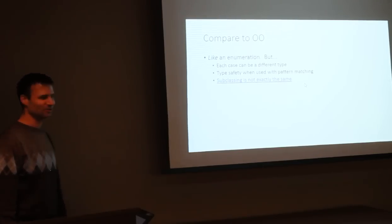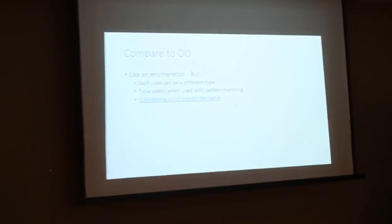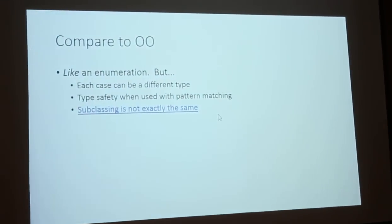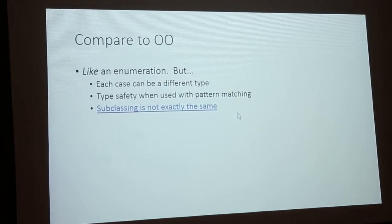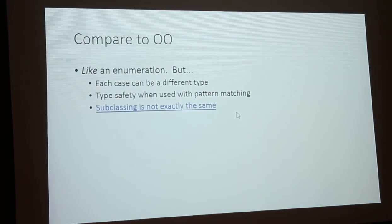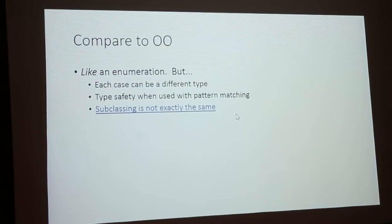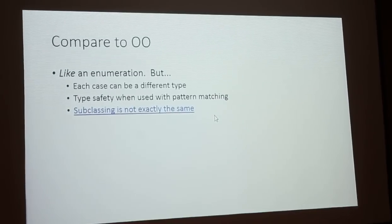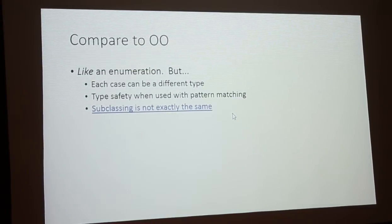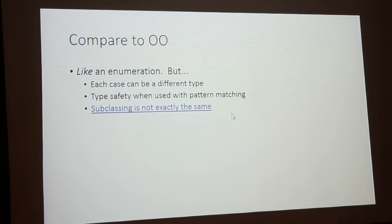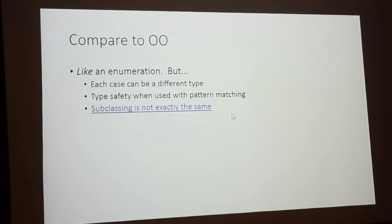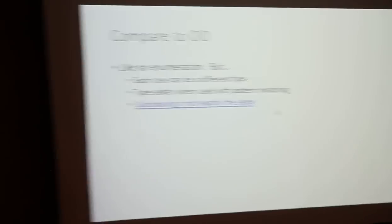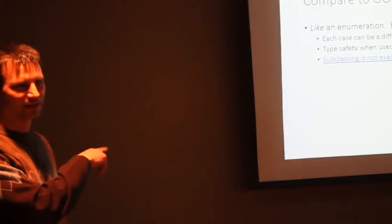All right so discriminated unions comparing it to oh so they're like an enumeration right we kind of see that and that's not a bad way to think of it especially if you're coming from object oriented programming language. However as we've seen each case can be a different type so there's data associated with that specific data associated with something in a discriminated union. It's not merely just a case or control flow construct there's a piece of data there. Also you get type safety when used in pattern matching.